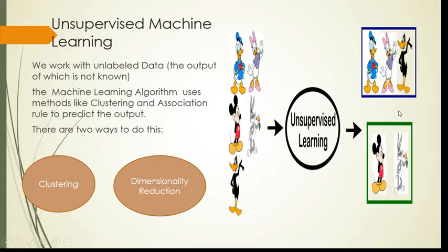How do we do it? We do it with two algorithms. First is clustering and the second is dimensionality reduction. This machine learning algorithm uses methods like clustering or dimensionality reduction to predict the output. It does it through clustering or reducing the dimensions.